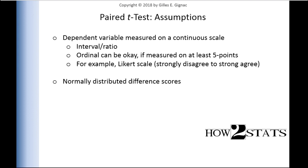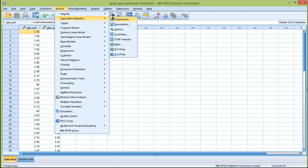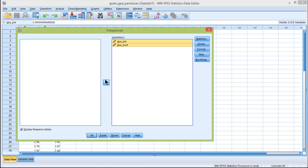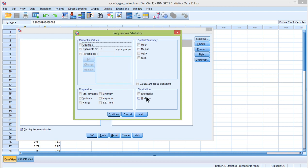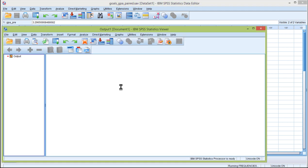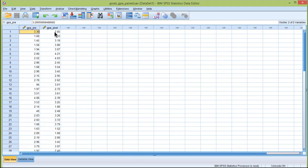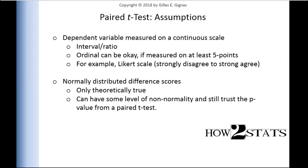The next assumption is about normal distribution. Similar to the independent sample t-test, it's theoretically true that the scores have to be normally distributed. But what's different is that the emphasis is on the difference scores. You don't actually have to evaluate normality for these two scores. I could measure skew for GPA pre and post, skew and kurtosis, and I'll get an estimate of skew for both. But that's not the level at which you should be evaluating skew. You actually should be evaluating it for the difference scores, and I'm going to do that in a separate video.